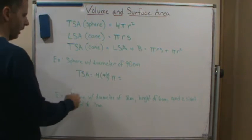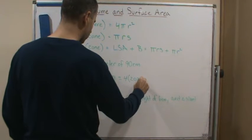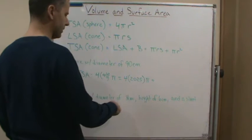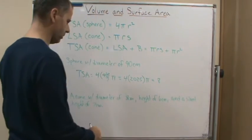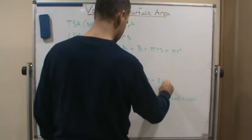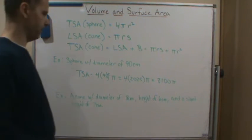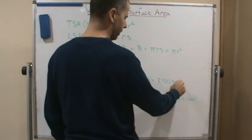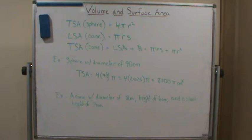In this case, 45 squared is 2025, so it's 4 times 2025 times pi, and that gives us 8,100 pi, and the surface area is in centimeters squared. So the exact answer is 8,100 pi square centimeters. But if we multiply by pi in our calculator, rounded to the nearest square centimeter, that would give us 25,447 square centimeters.